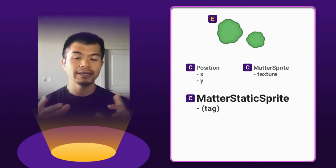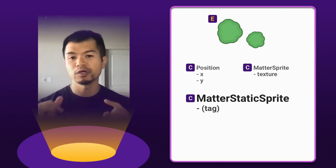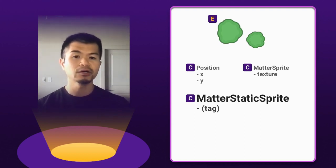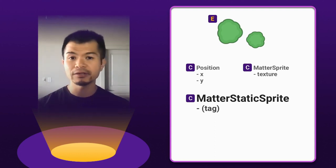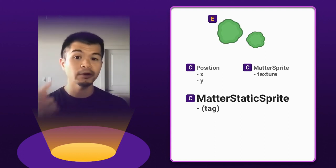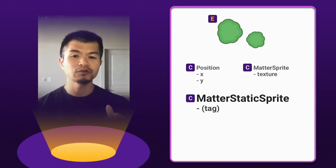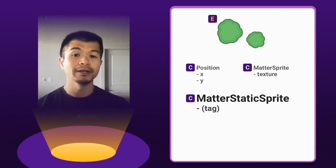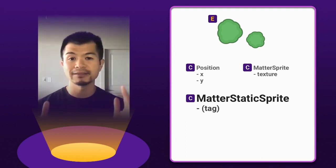In our Arcade Physics video, we did it a different way — we created another sprite component type. So for example, if you want to do that here, you can create a matter static sprite component with a texture property on that component, and then create a new system that only creates static matter sprites. We're just showing you another way you can do it with this matter static sprite tag component.